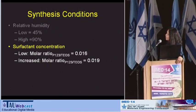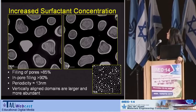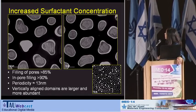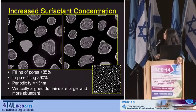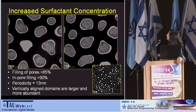Let's now check the influence of the surfactant concentration. The results I've shown you so far were of a low surfactant concentration. Increasing the surfactant concentration, we see good filling of the pores — almost all of them indeed have a mesostructure inside. The in-pore filling has also improved, and the mesostructure did not shrink. We can see a larger, more abundant vertical orientation of the hexagonal phase inside the pores.